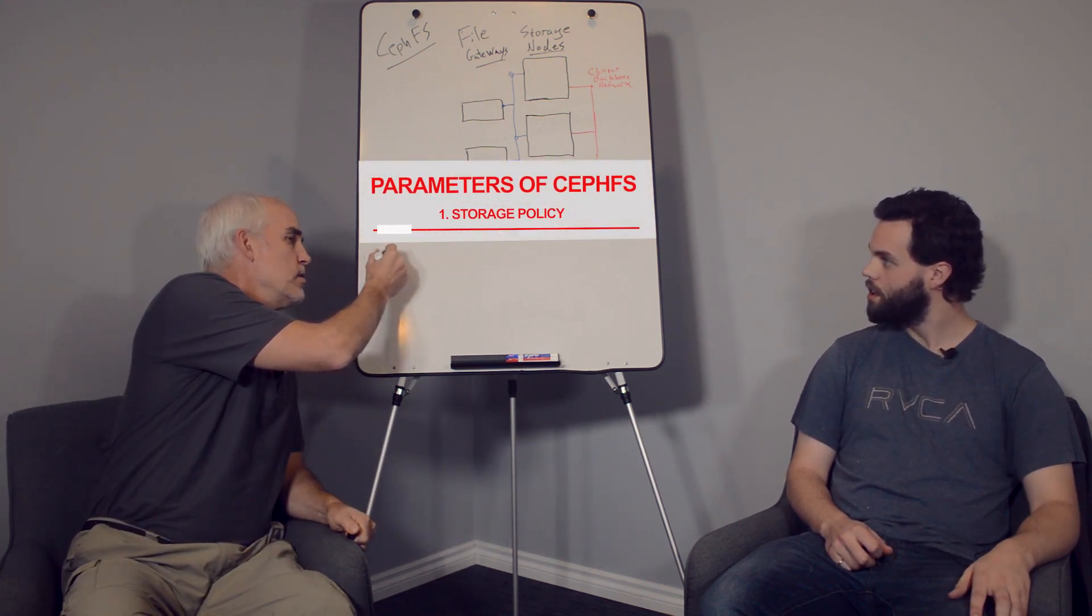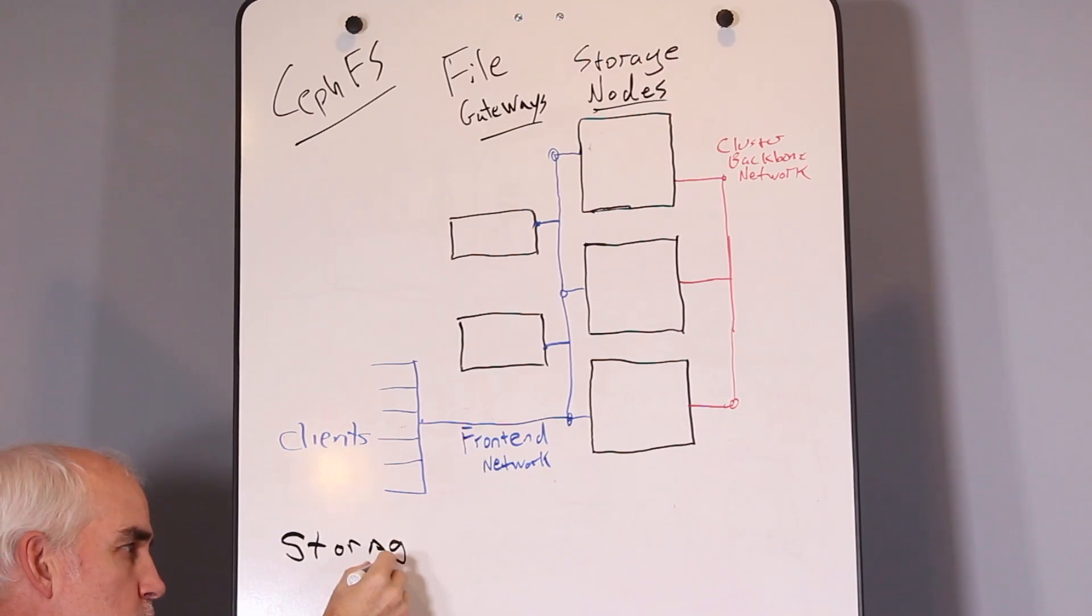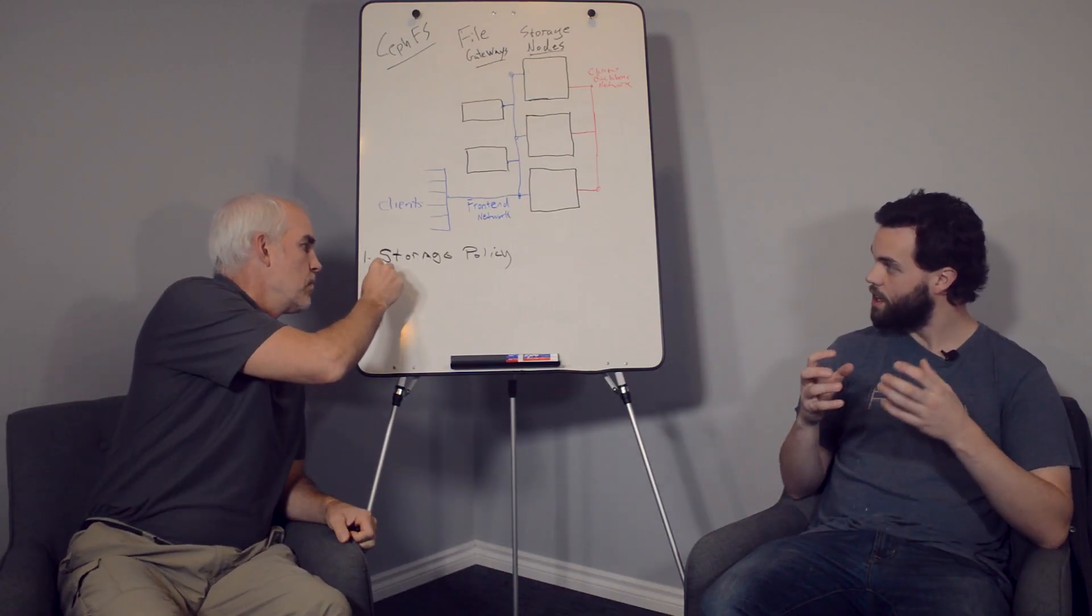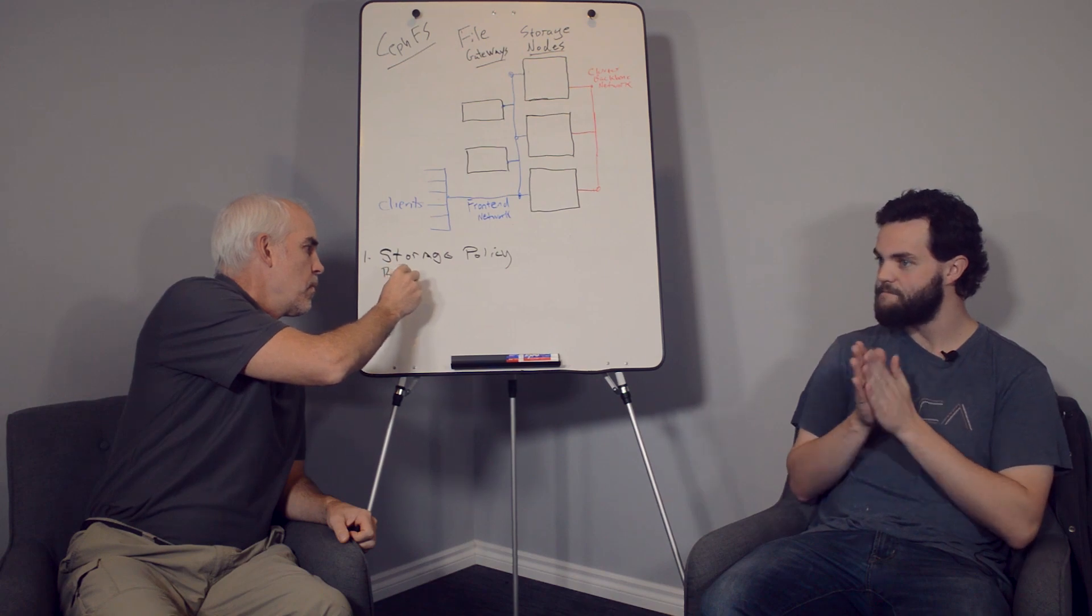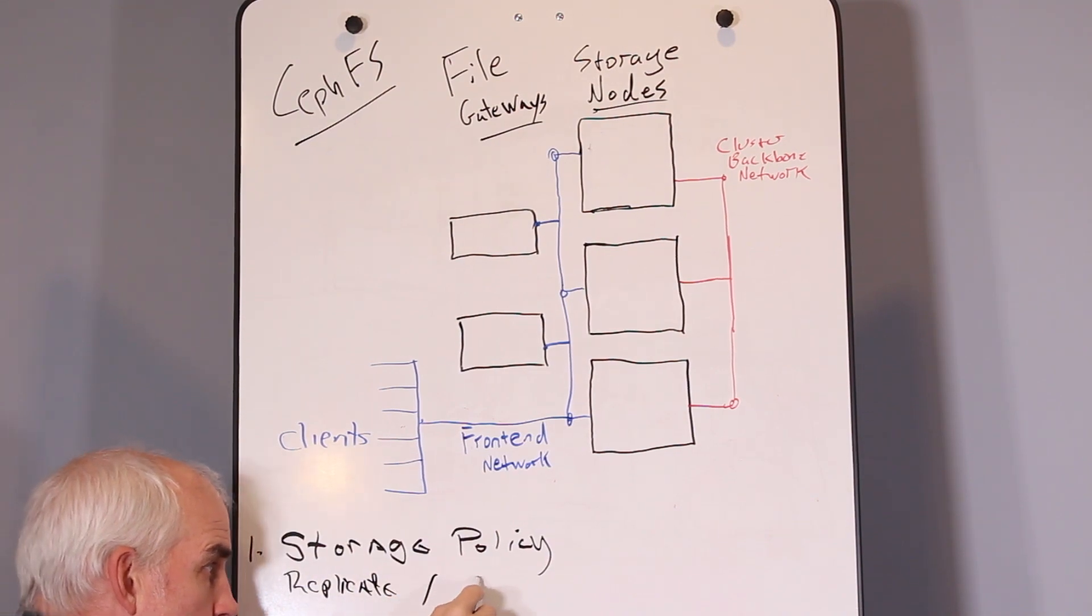So the first one is storage policy. What are my options for storage policy? Well, you've got two and you get some choices broken down from that, but there's two choices here. You can replicate or you can erasure code. And what storage policy here is - this is truly the defining part of how you're going to keep your data safe. Do you want three copies? Do you want two copies? Do you want to break it up into an erasure code?